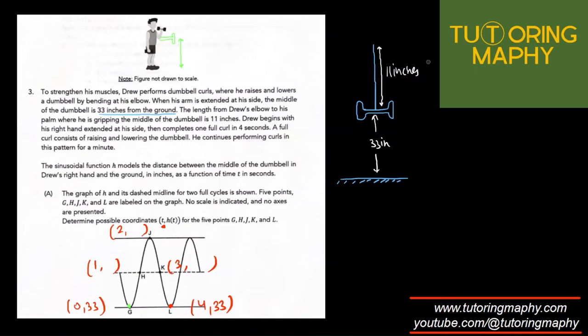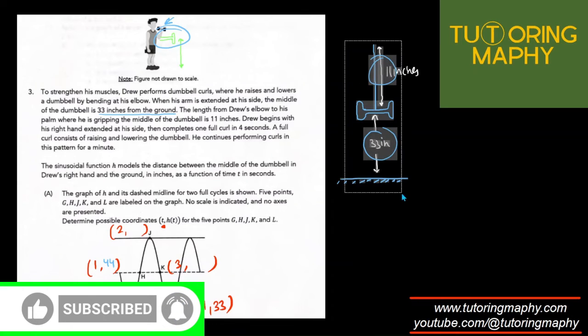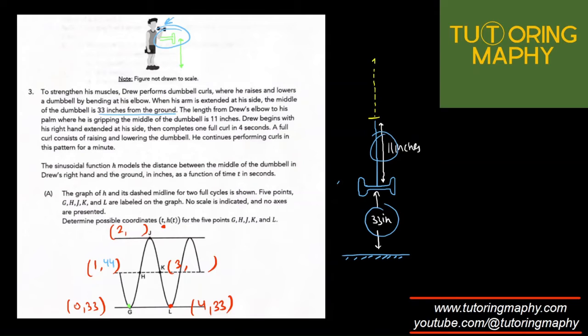When he's in the midline, the green position, the total height should be 33 plus 11 which is 44. When he has fully raised, it's 33 plus 11 plus 11, which is 55 inches. So this should be (1, 55), this should be (2, 44), and this should be (3, 33). These should be the possible coordinates of G, H, J, K, and L.